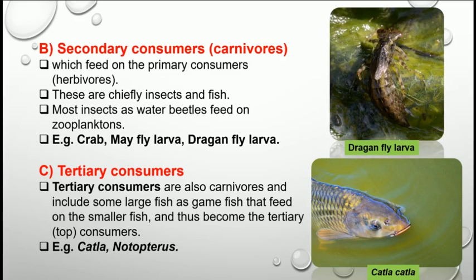Then the secondary consumers. Secondary consumers are the carnivores which feed on primary consumers or herbivores. They are mostly insects and fishes. Most insects such as water beetles feed on zooplanktons. Other examples of secondary consumers include crabs, mayfly larvae and dragonfly larvae.